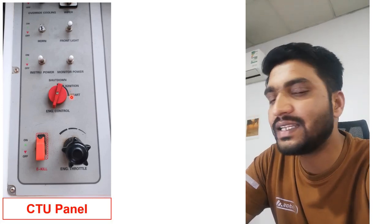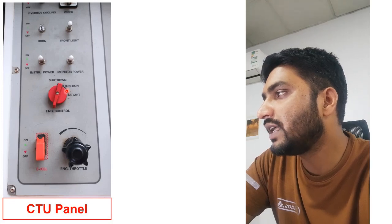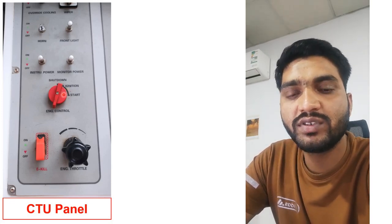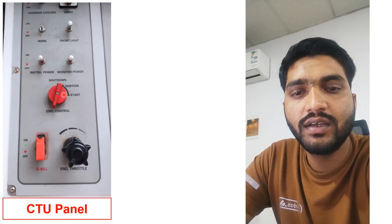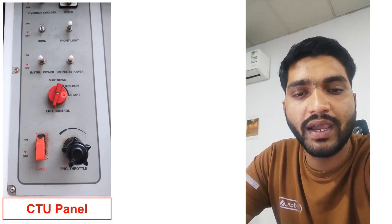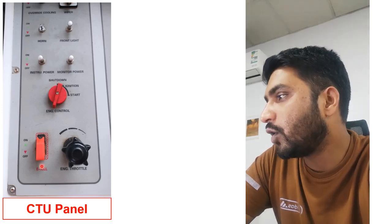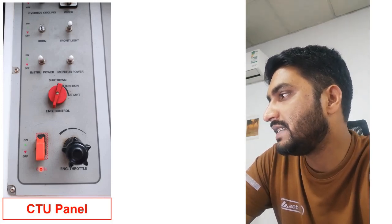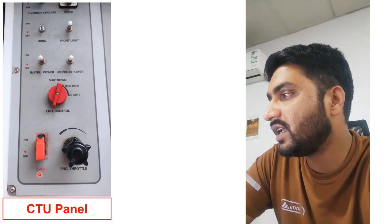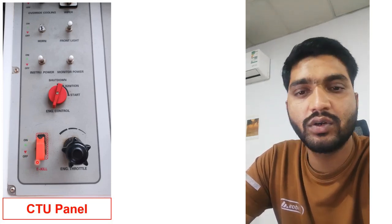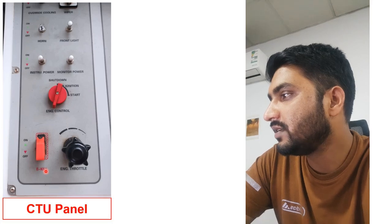When the engine is running, this knob will be on the ignition point, and when we want to shut down the engine, we will just turn it back to the shutdown position and the engine will be shut down. This is the normal kill — the normal shutdown mechanism, the normal procedure to turn off the engine. Then here at the bottom we have this second button mentioned as E kill, E meaning emergency kill. It has on and off positions.